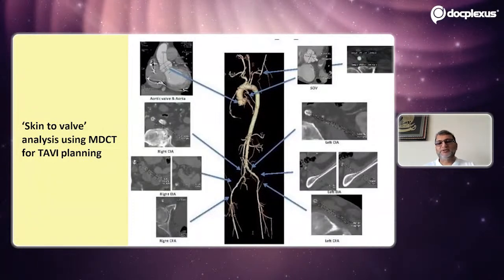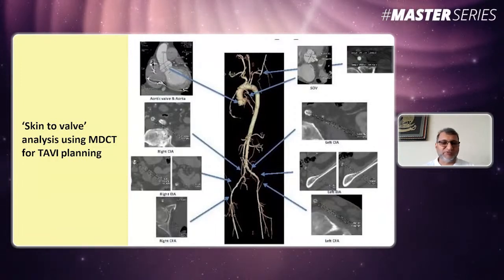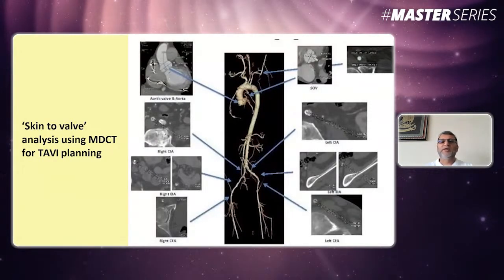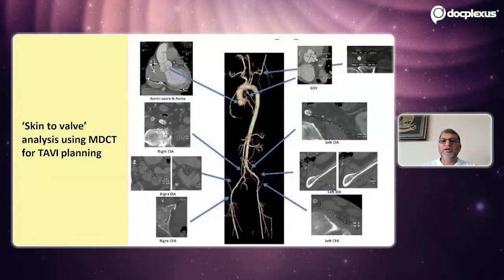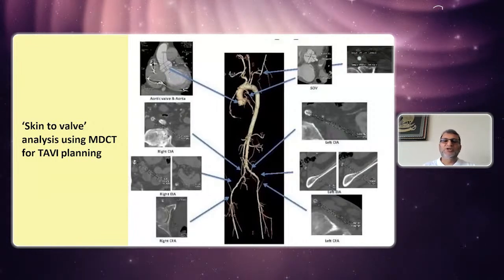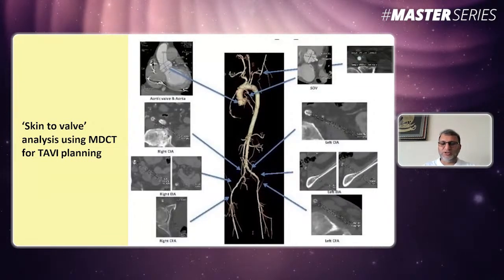From the CT scan we need to assess: atherosclerotic burden, vessel tortuosity, calcifications, and diameters of the annulus and aorta at different levels, as well as approach arteries. Skin-to-valve analysis is very important — right from the puncture site where the wire will be introduced, especially for transfemoral access. This assessment is mandatory, otherwise complications during TAVI are more likely. The common iliac, common femoral diameter, ascending aorta, descending aorta, and valve annulus — the whole study must be done, including 3D imaging using software like 3mensio.